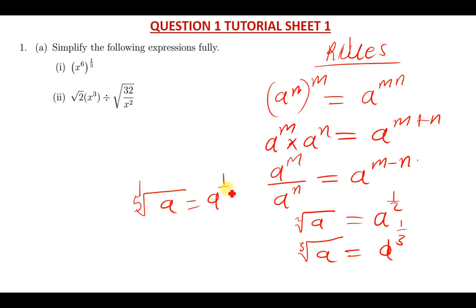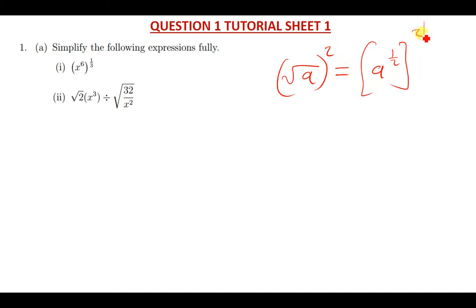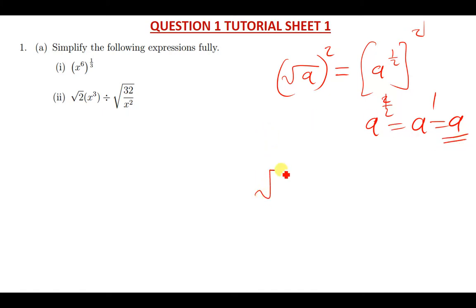What if you have the square root of a raised to the power two? This is the same as a to the power one over two, and then outside we have a squared, so we multiply: two times one-half gives a to the power two over two, which is just a to the power one, which gives us a.